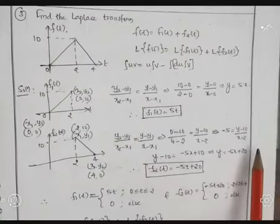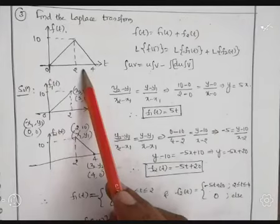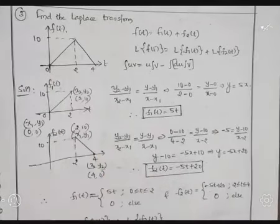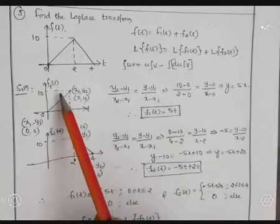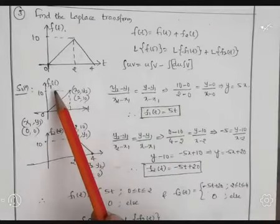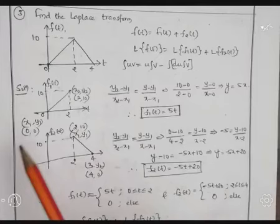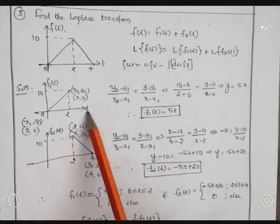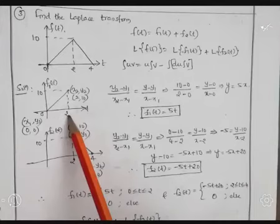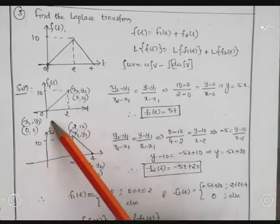We have to find the respective amplitudes for these two intervals. I am going to split this triangular function into two parts. The first part, f1(t), represents the amplitude for the duration t = 0 to 2.